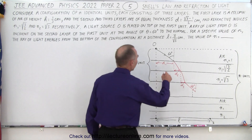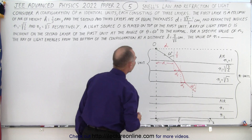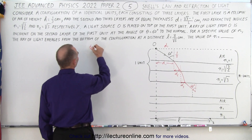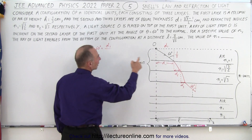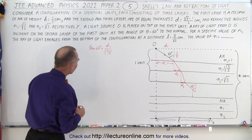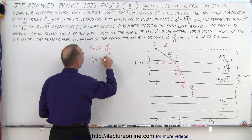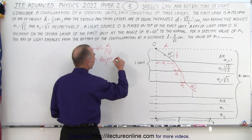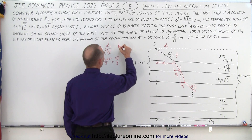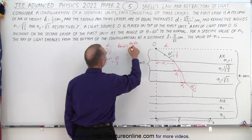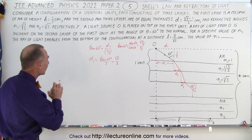For d1, the first layer thickness is 1/3 centimeter and the angle in air is 60 degrees. Using trigonometry: tan(60°) = d1 / (1/3), so d1 = tan(60°) / 3. Since tan(60°) = √3, we get d1 = √3/3.